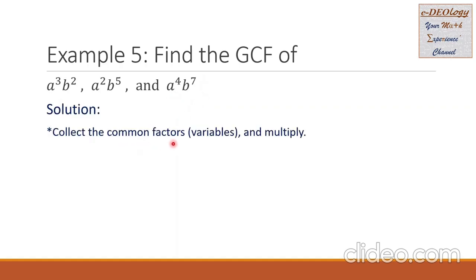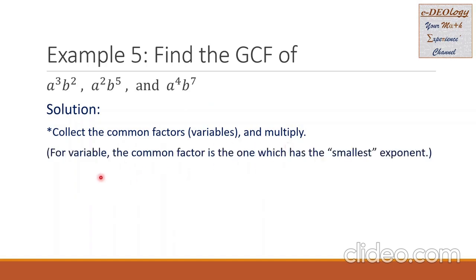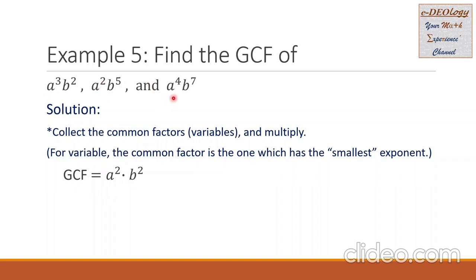Let's collect the common factors or variables and multiply them. For variables, the common factor is the one which has the smallest exponent. All three terms have the variables a and b respectively. Therefore, for the GCF, we have a squared — because a with power 2 is the smallest — times b squared, as b squared is the smallest exponent for b.